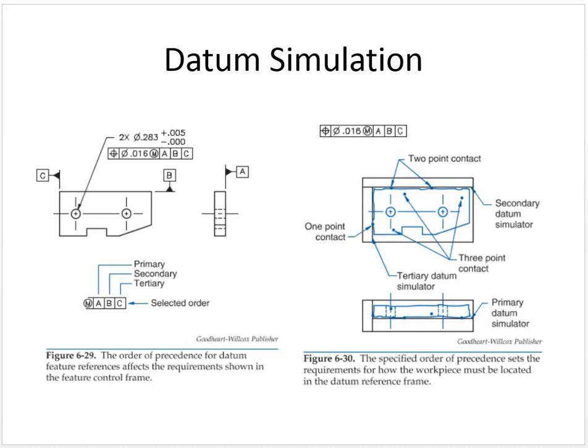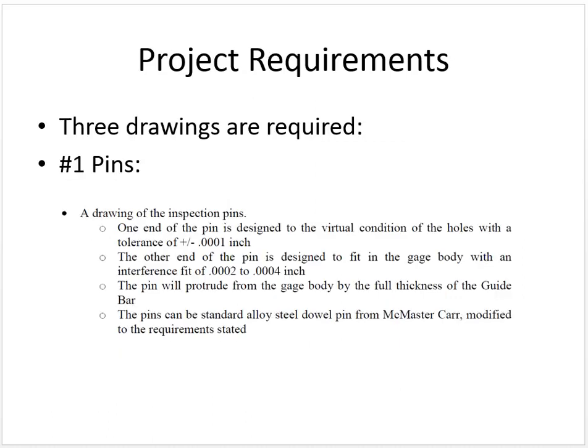Let's talk about the project requirements. I tried to be pretty explicit on this because I wasn't too explicit on the last one, so let's see if this works a little bit better. There are three drawings required for this project. The first one would be the drawing of the inspection pins. One end of the pin is designed to the virtual condition of the hole — this is the part of the pin that sticks up through the guide bar when it's being inspected. I want that tolerance on the end of that pin to be plus or minus one-tenth of an inch.